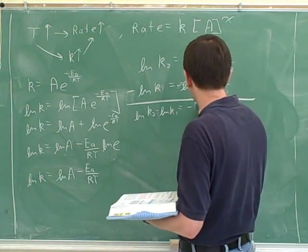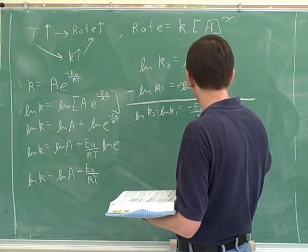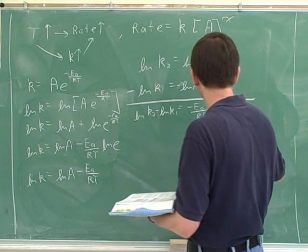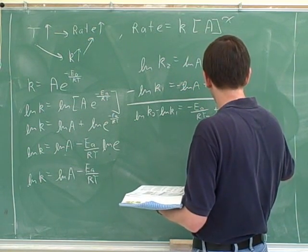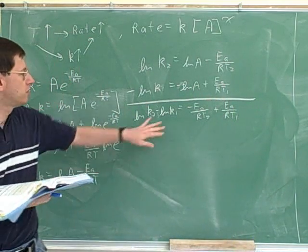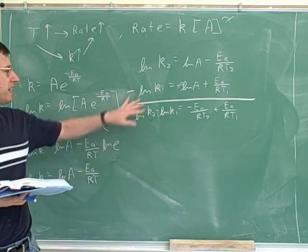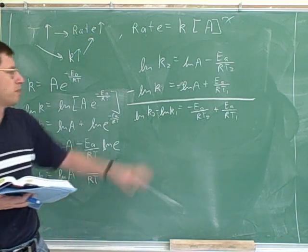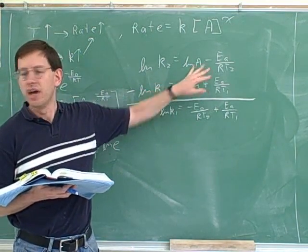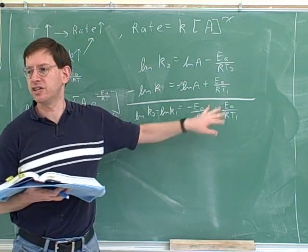And over here, we would have negative Ea over RT2 plus Ea over RT1. So I've subtracted, or I've multiplied by negative 1 and added, and these are the equations. So by using two different rows of data, we were able to get rid of this constant which we didn't know. Again, our goal here is to figure out what the activation energy is.